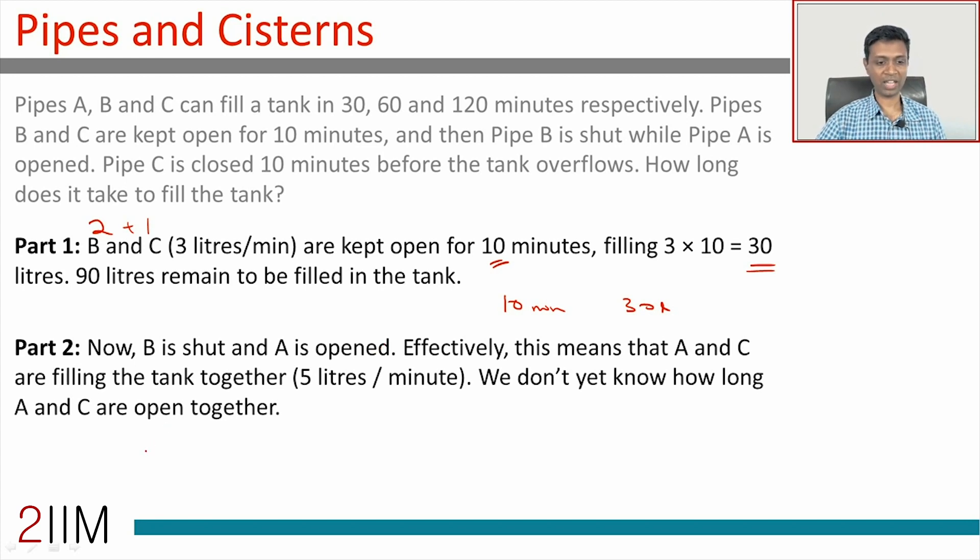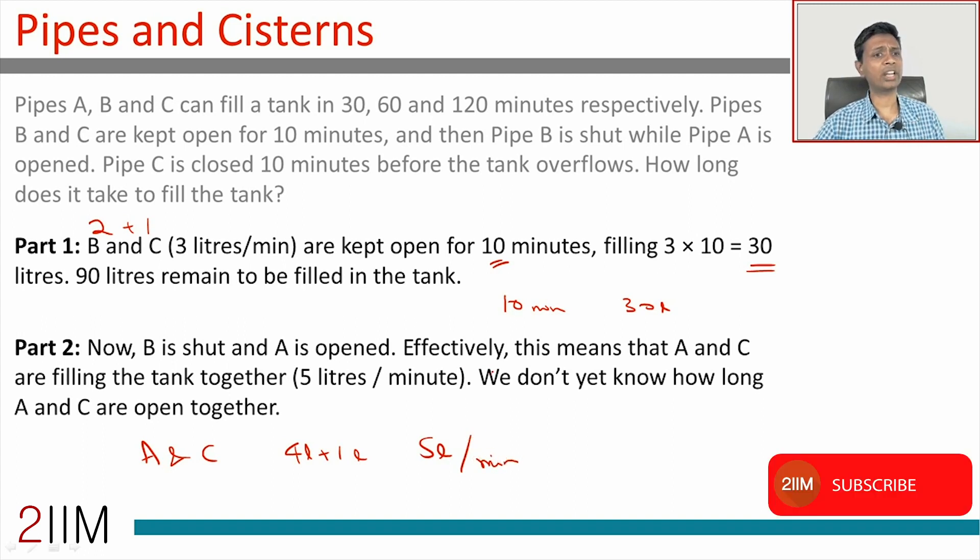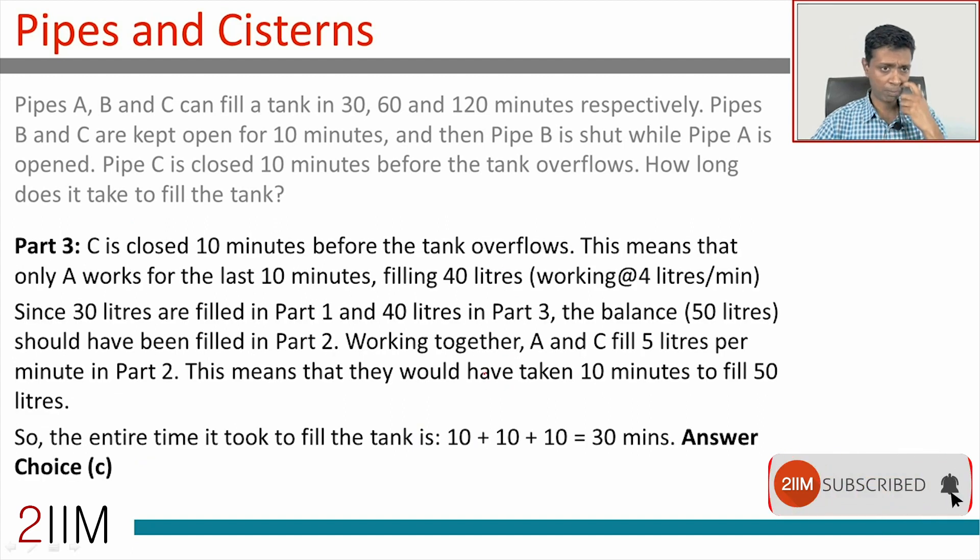Then B is shut down while A is open. So now in this phase, B is gone. A and C operate together. A and C will operate at 4 liters plus 1 liter, at the rate of 5 liters per minute. We don't yet know how long they are kept open for, so they'll fill at the rate of 5 liters per minute. We don't know how long they are kept open for—keep that aside.